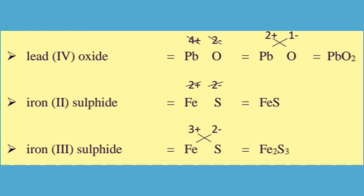Iron also has variable oxidation numbers: 2 plus and 3 plus. For iron(II) sulfide, Fe has oxidation number 2 plus and sulfide is S with oxidation number 2 minus. 2 plus and 2 minus cancel, so the formula is FeS.